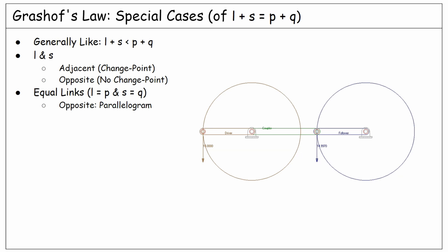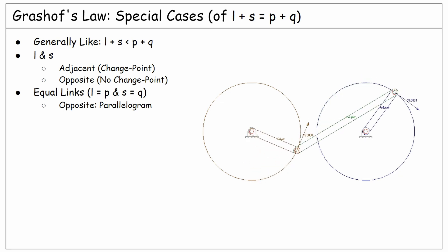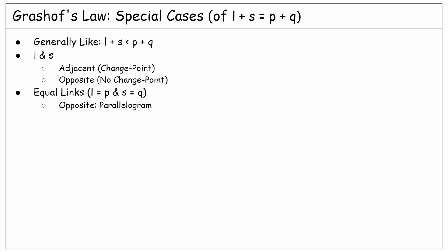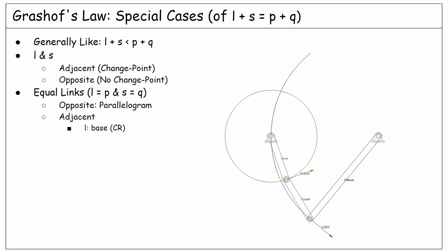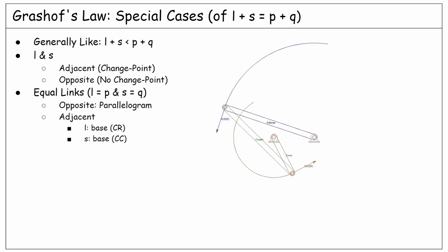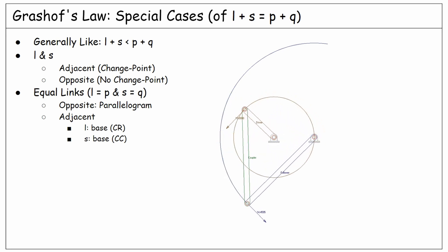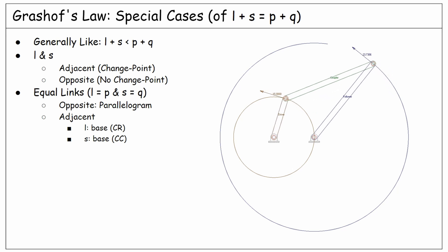As you see in this working linkage, after changing the direction of motion for the follower, it is no longer a parallelogram. If the equal links are not opposite, meaning that they are adjacent, then we need to look at the base link. If the base link is the longest link, then we will have a crank-rocker motion, as you see here in this example. If the base link is the shortest, then we will have a crank-crank motion. What is interesting about this crank-crank case is that for a full round of the follower rotation, the driver needs to rotate two full rounds.